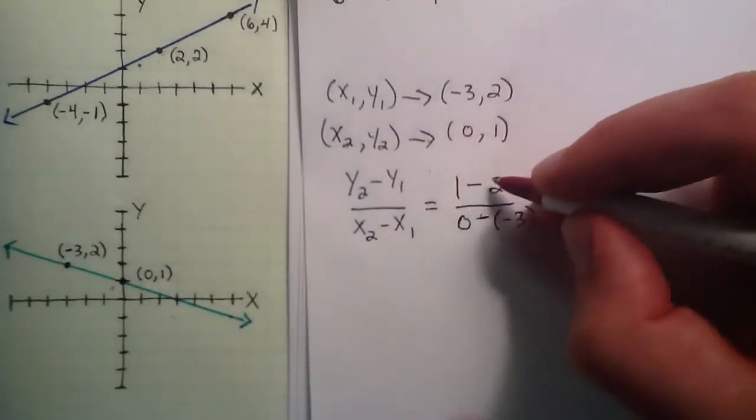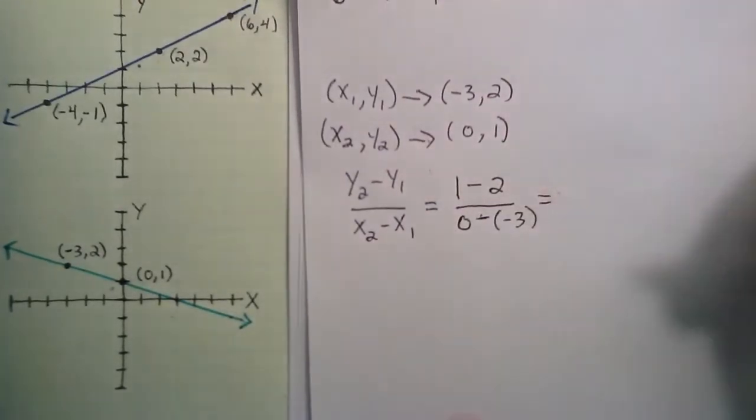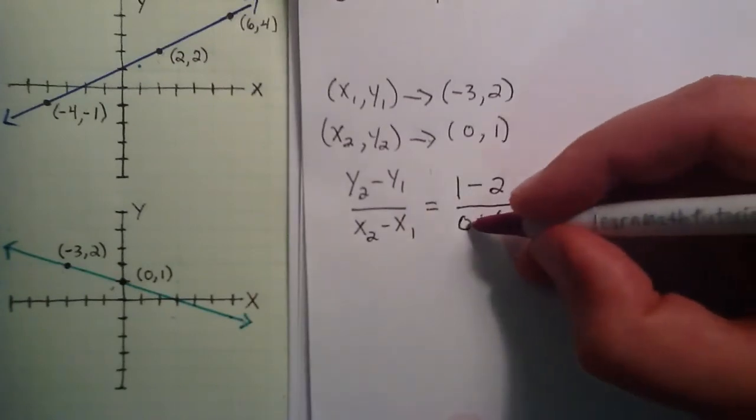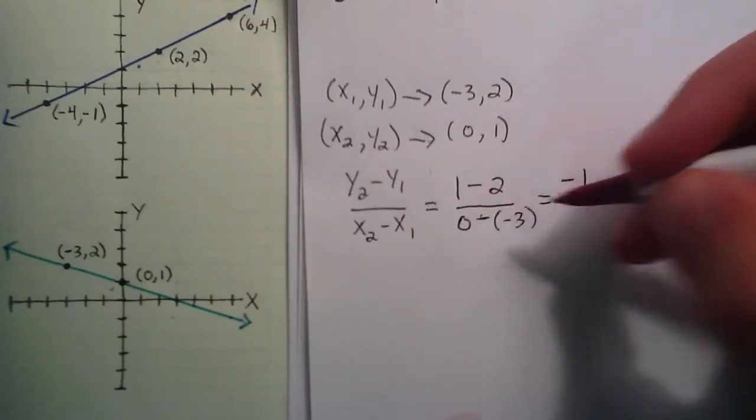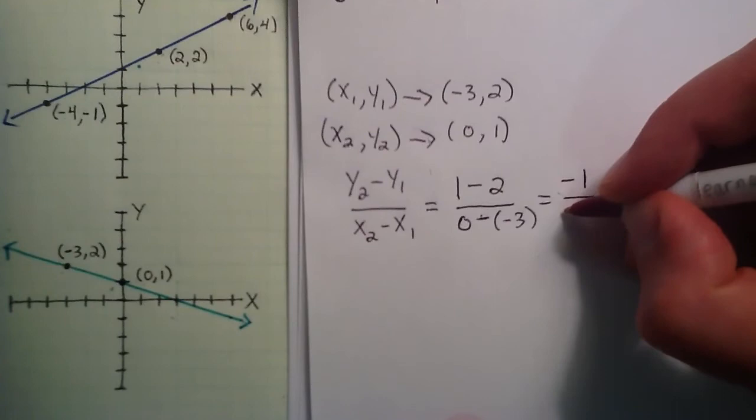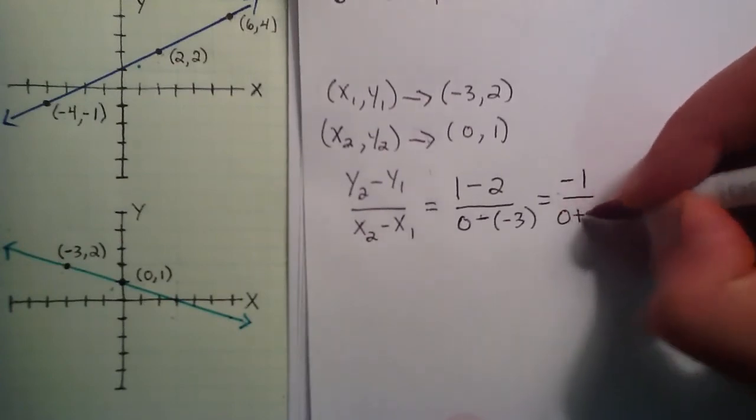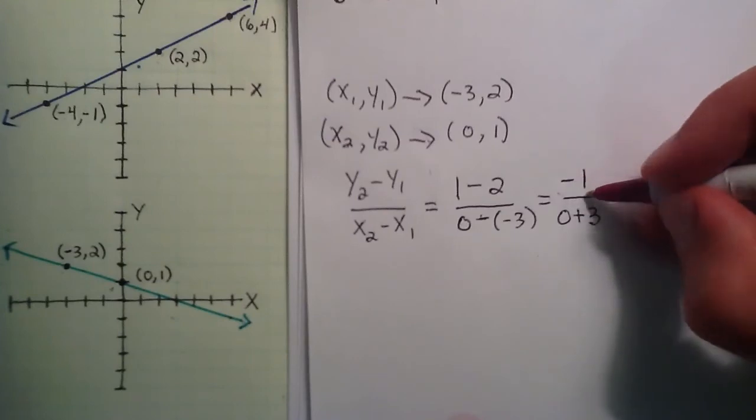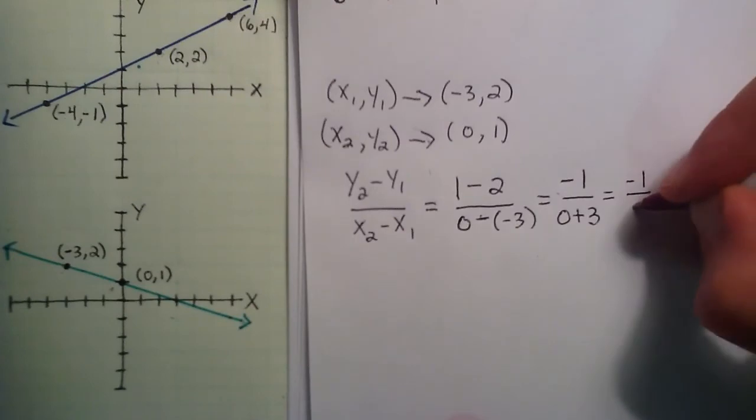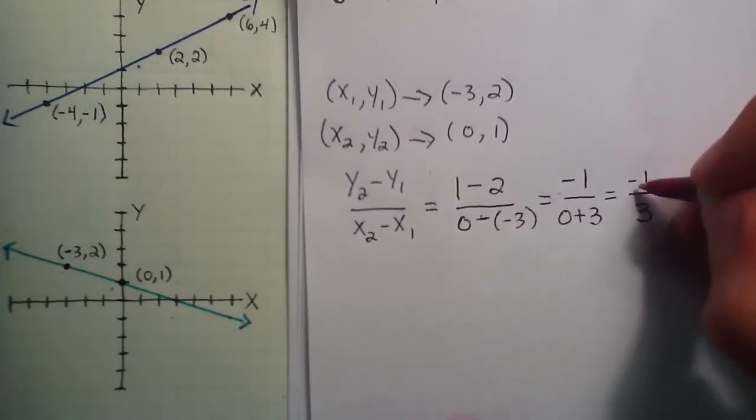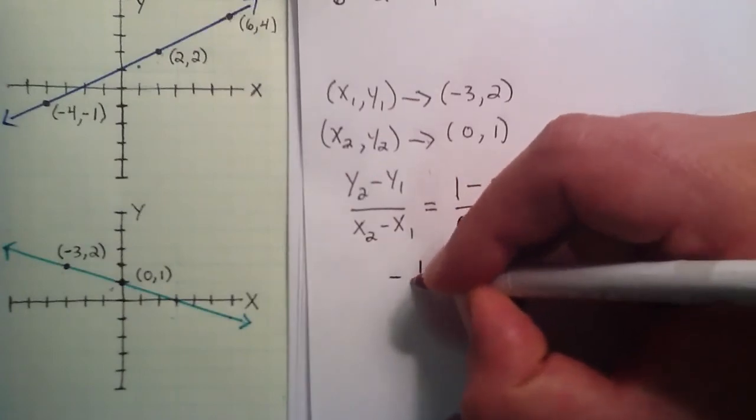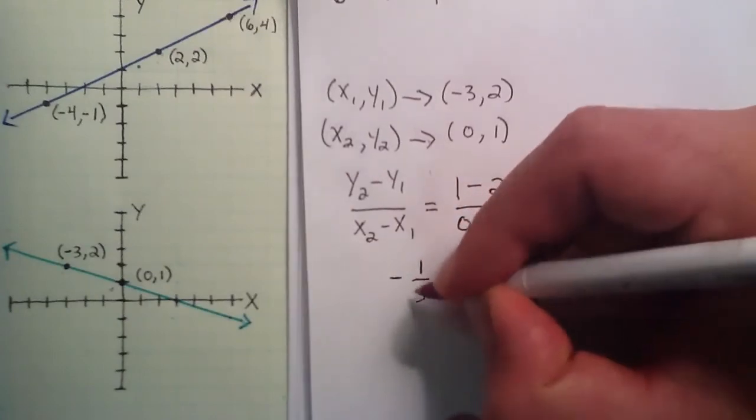So 1 minus 2 gives us negative 1. And 0 take away a negative number is the same thing as adding that as a positive number, so 0 plus 3. So now we have negative 1 divided by 0 plus 3, which is simply negative 1 divided by 3. And bringing the negative out front doesn't change anything, so we can write this in a nicer form as negative 1 third.